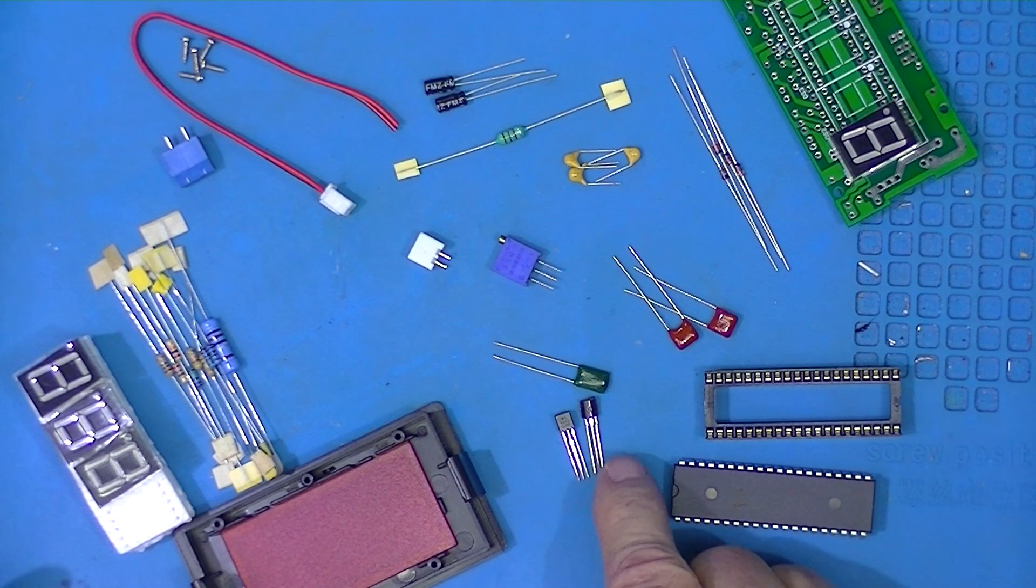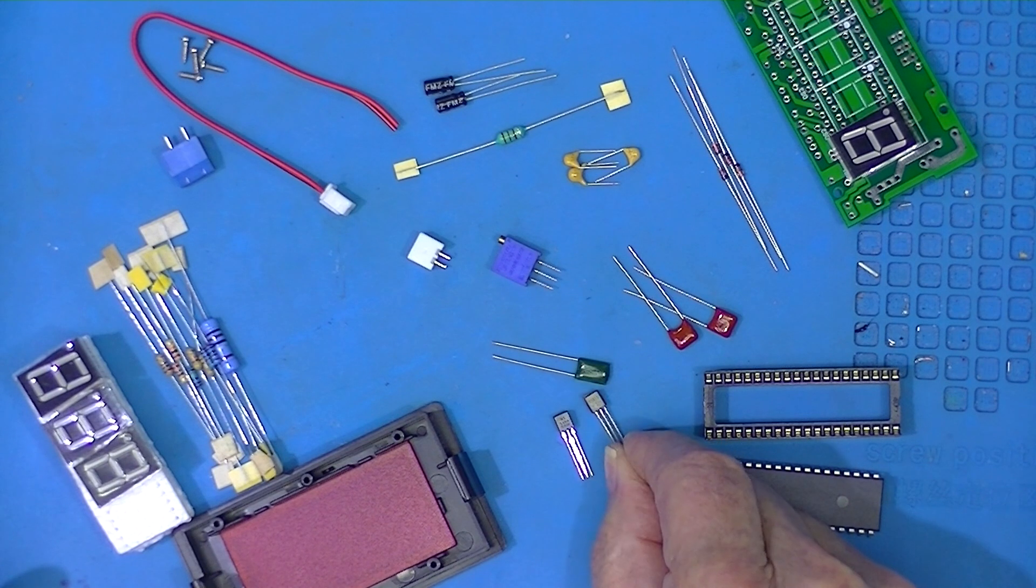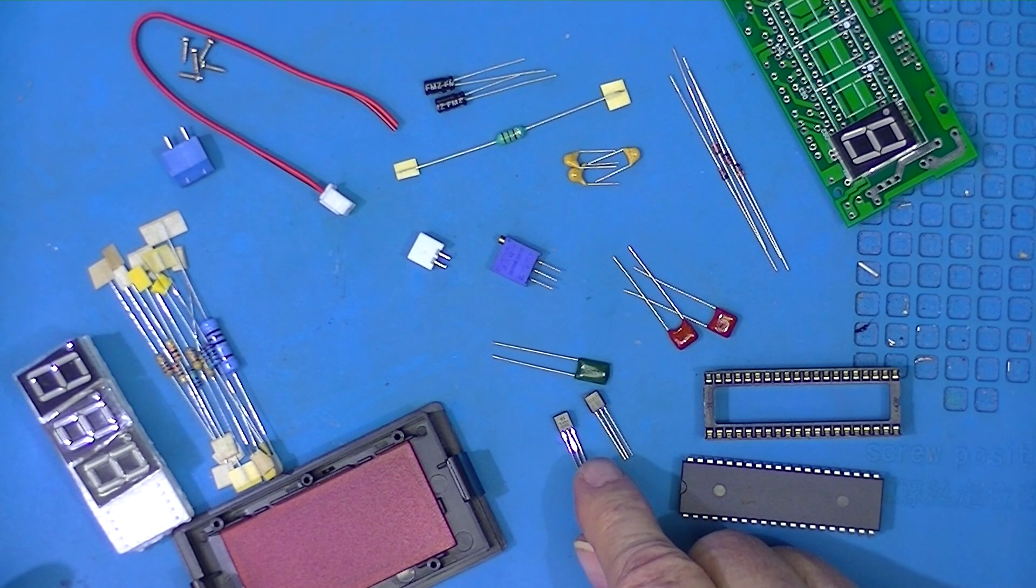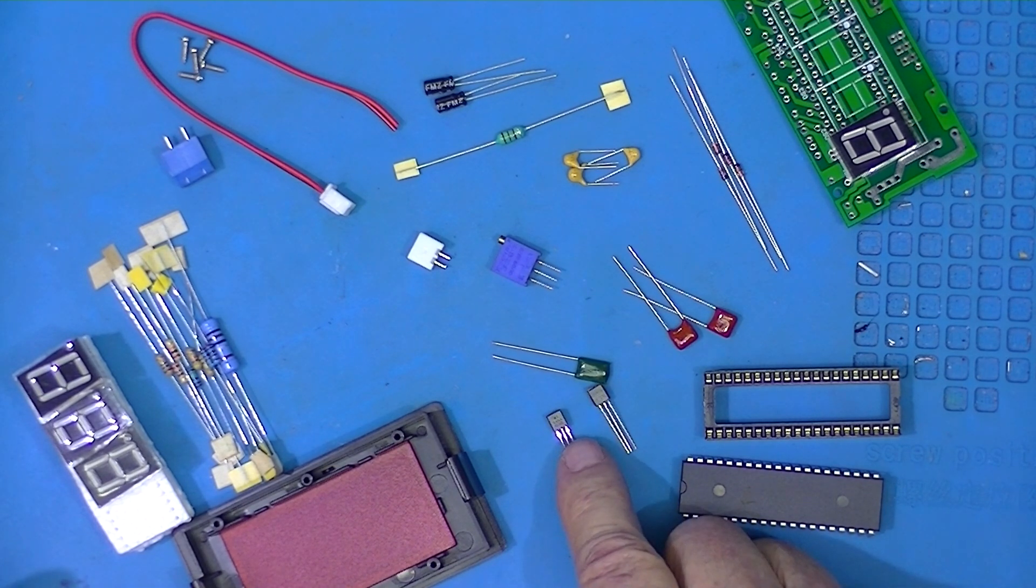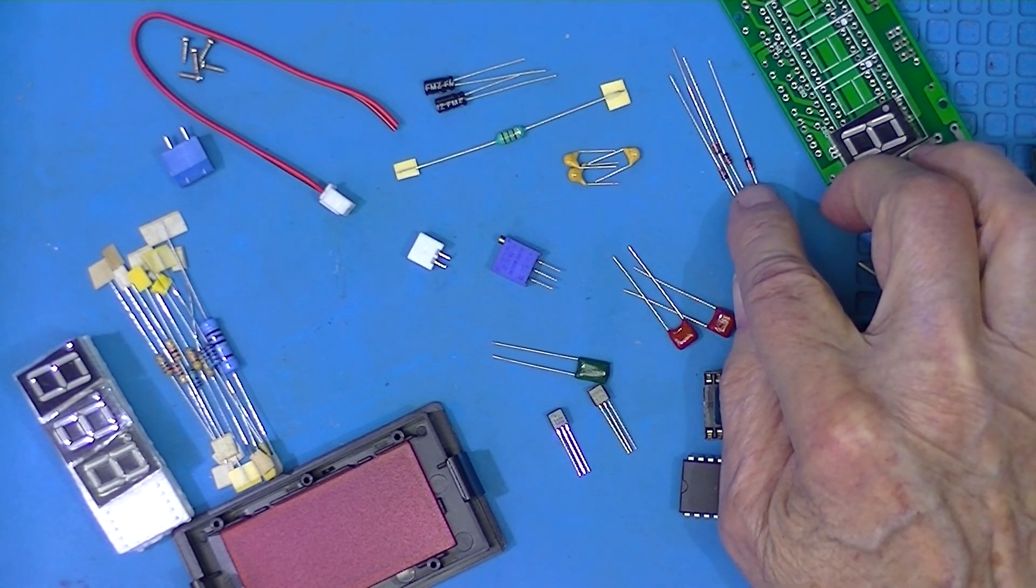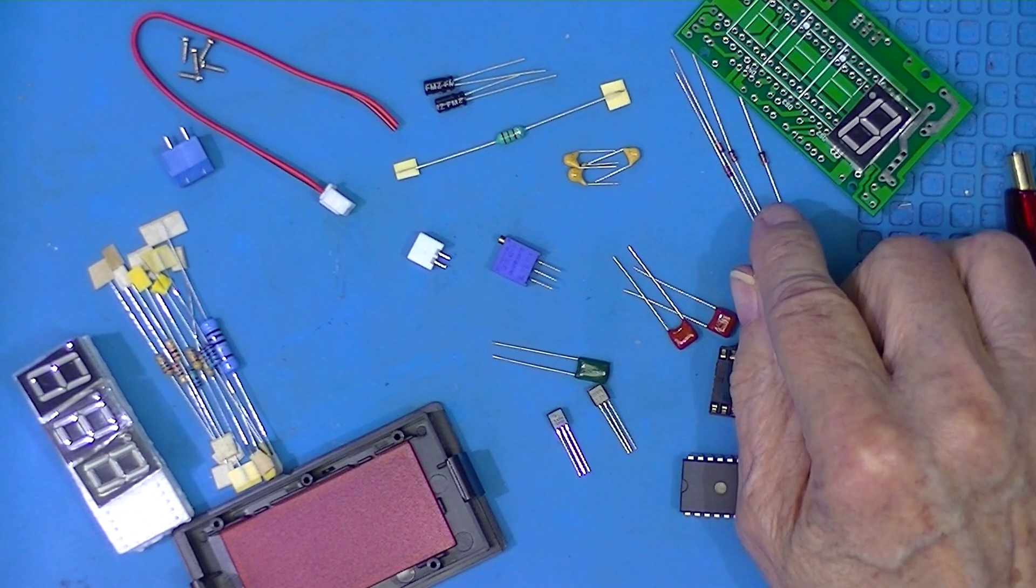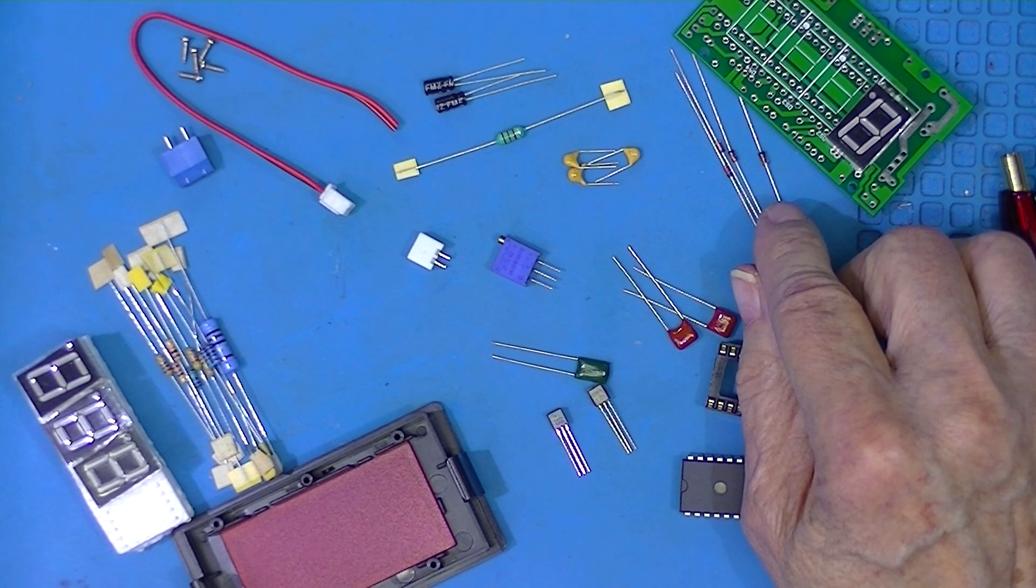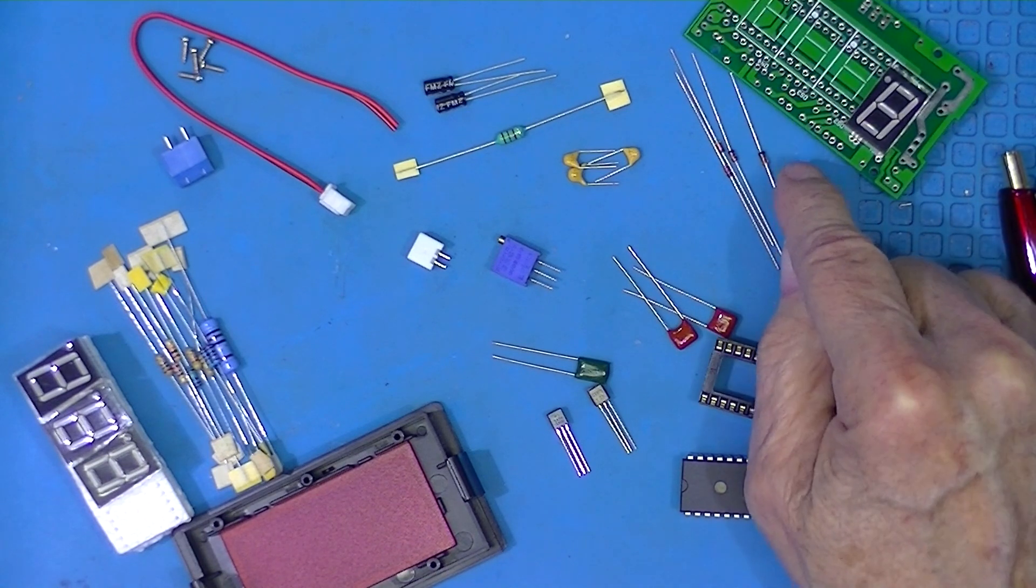One of these is an NPN transistor and one of them is a TL431 voltage reference, so you need to read the face of them and sort out which one's which. There's four little glass diodes, three of them are common small signal diodes 1N4148.